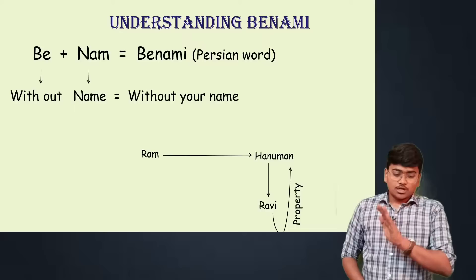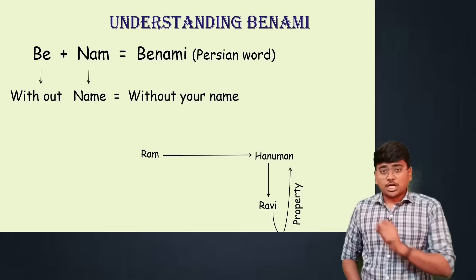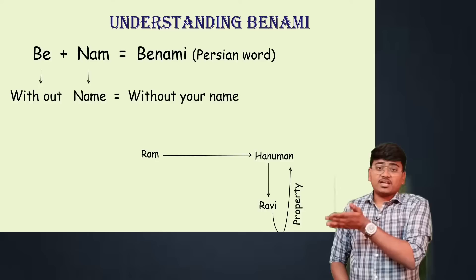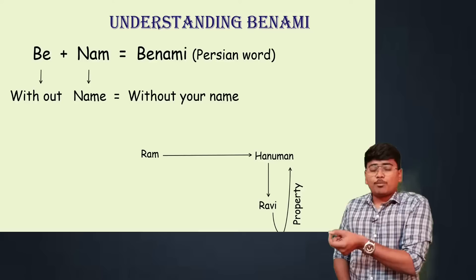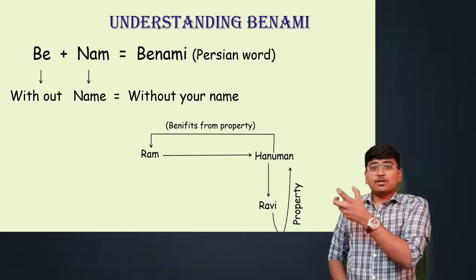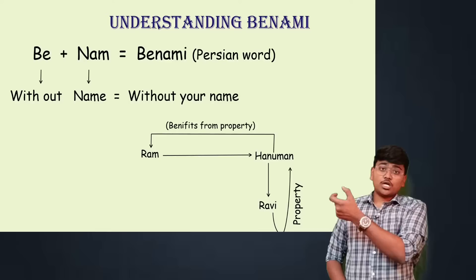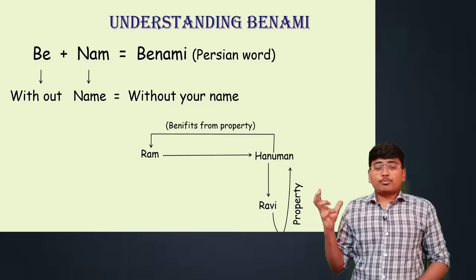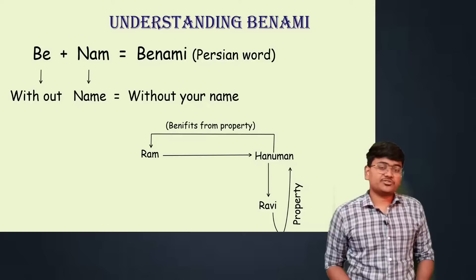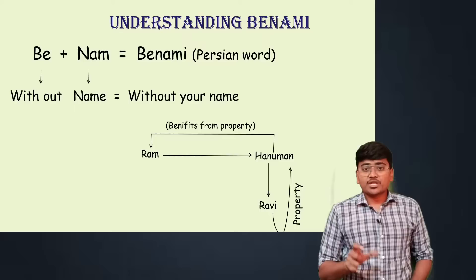Ram has given a gift of one crore rupees to Hanuman, and Hanuman purchased the property from that amount. Therefore it will be treated as a gift transaction under the Income Tax Act and gift tax will be charged from Hanuman. For this to be called a benami transaction, let's say after purchasing the property, Ram asked Hanuman to give this property on rent for 5 lakh rupees. Hanuman receives this 5 lakh in his bank account, and then Ram asks Hanuman to withdraw and hand it over to Ram. The benefits derived from the property in Hanuman's name are transferred to Ram — in this case, this transaction will be called a benami transaction.